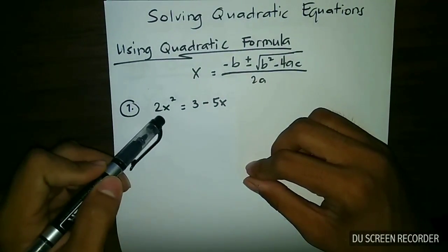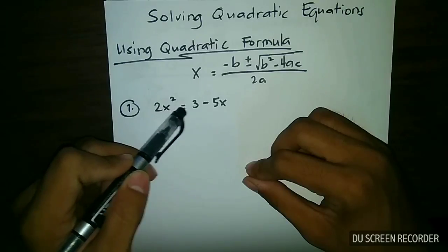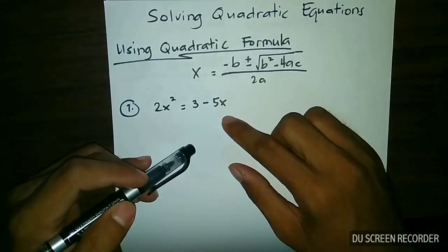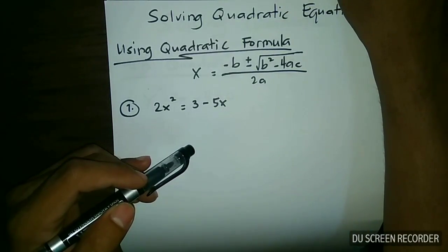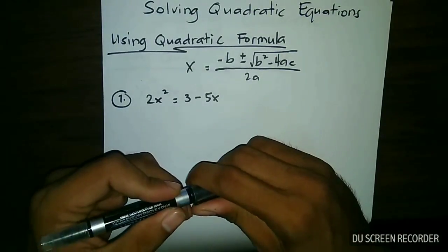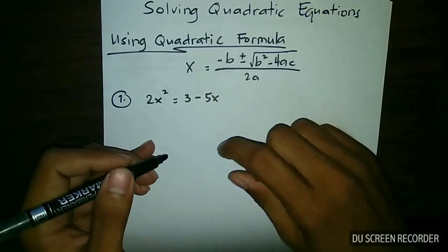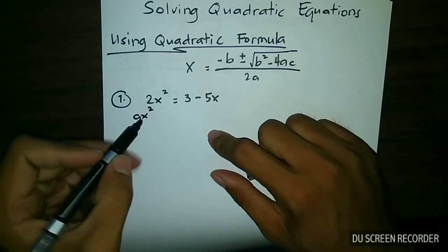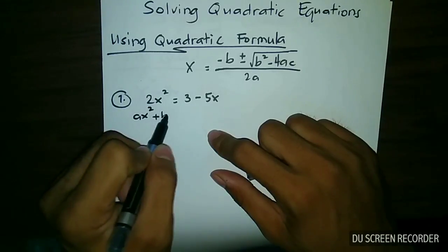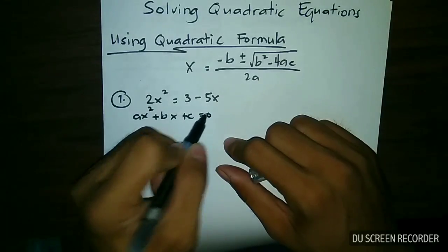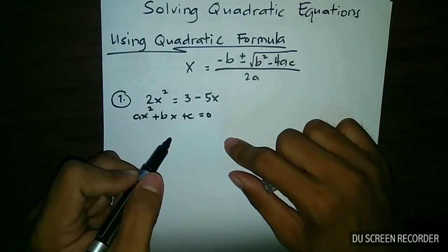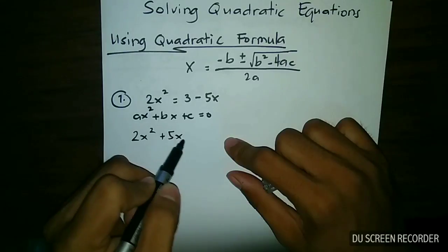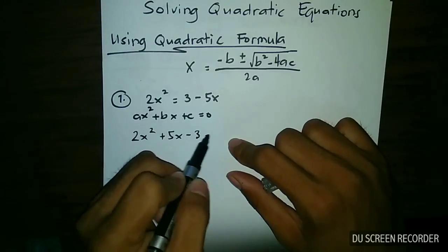Our first example is 2x squared is equal to 3 minus 5x. What is the first step in solving this quadratic equation? Step 1 is you need to write this quadratic equation in standard form, which is ax squared plus bx plus c is equal to 0. The standard form of this equation is 2x squared plus 5x minus 3 is equal to 0.